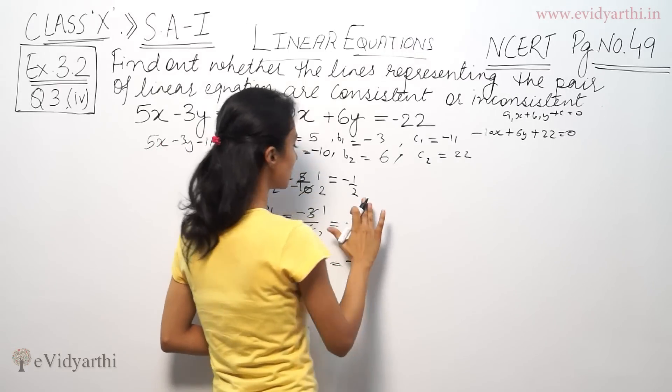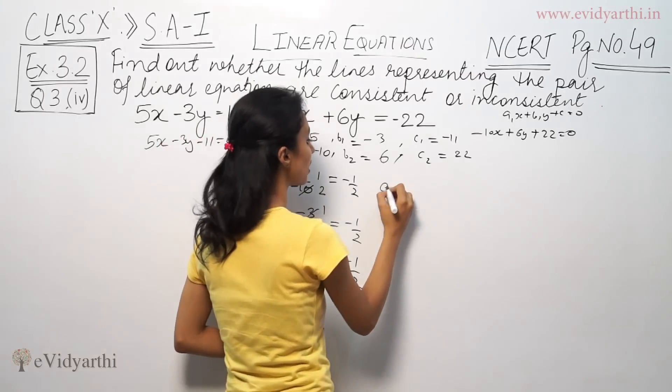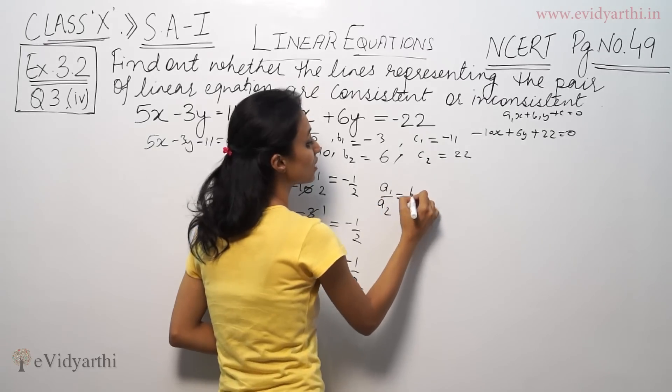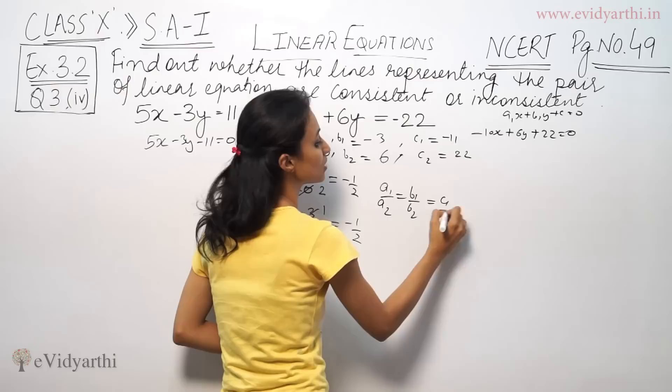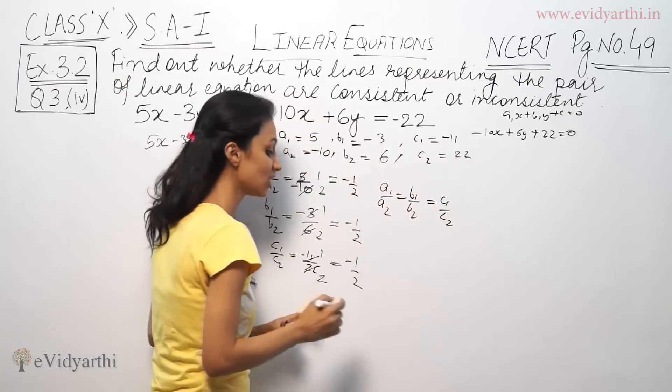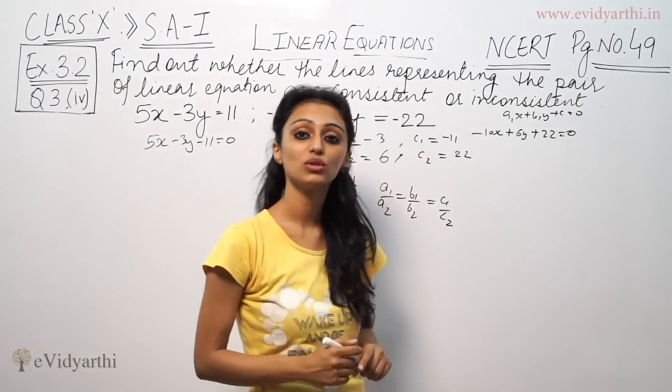That means, all 3 are the same. This means a1 by a2 is equal to b1 by b2 is equal to c1 by c2. In this case, 3 are equal, that means our lines are coincident.